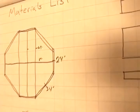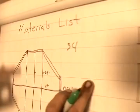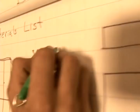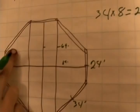We'll take our thirty-four inches first. We're going to need eight of these - four for the bottom, four for the top. So we multiply that by eight and get two hundred and seventy-two.